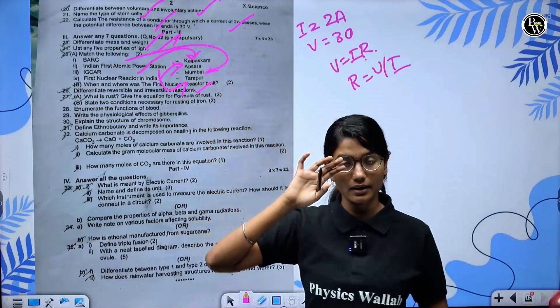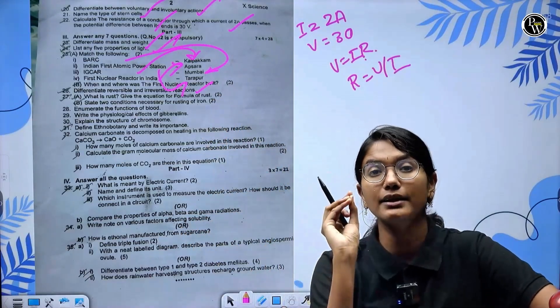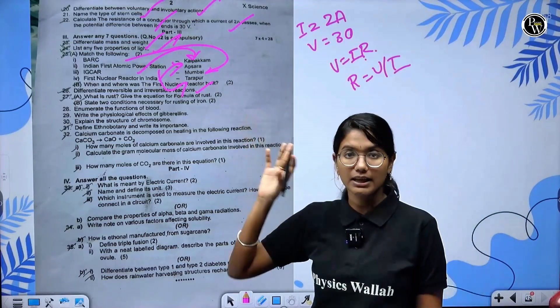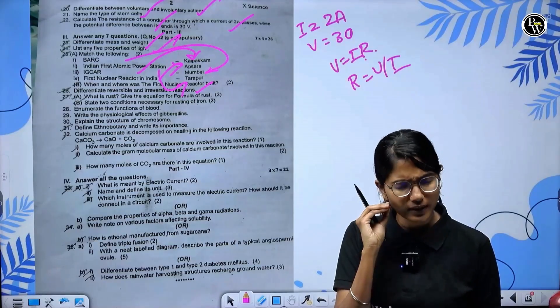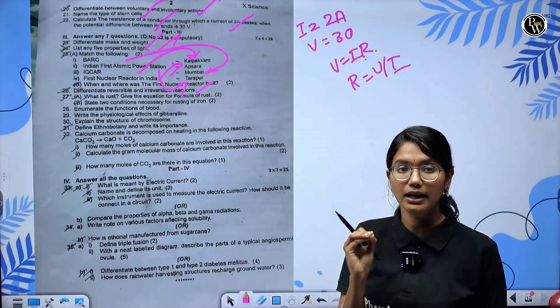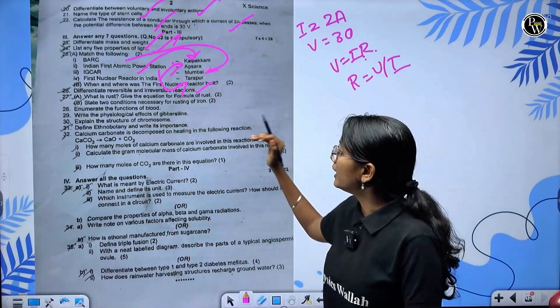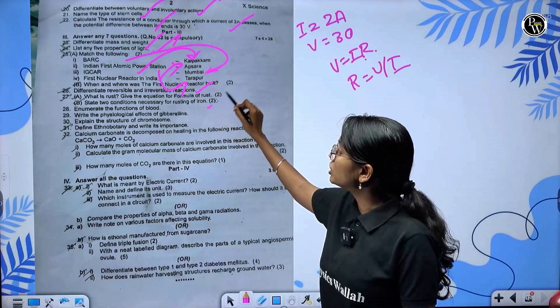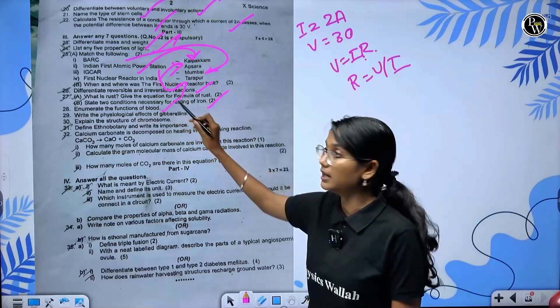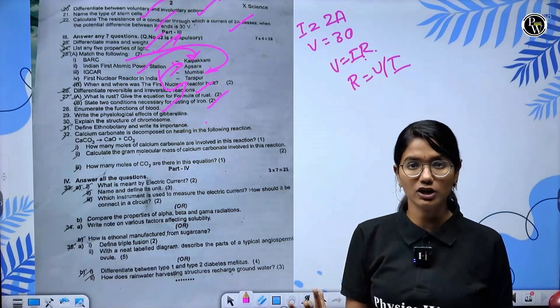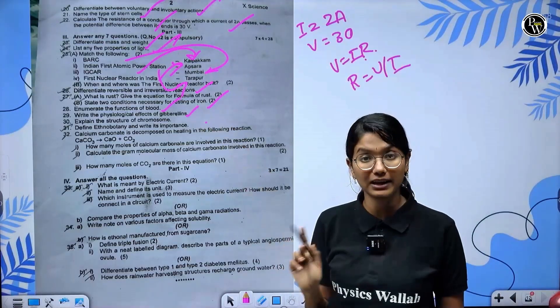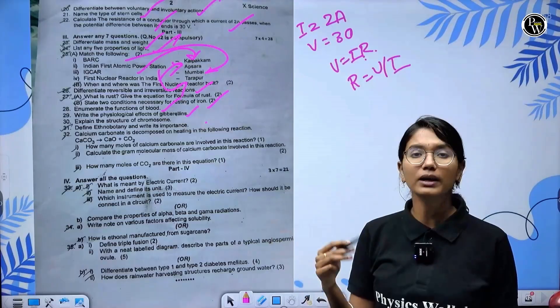Differentiate irreversible and reversible reaction in types of chemical reaction chapter with proper examples. What is rust in periodic classification and metallurgy chapter - this question is very important. The formula for rust. Two conditions necessary for rusting of iron - moisture and air. Functions of blood - transporting is one of the functions.